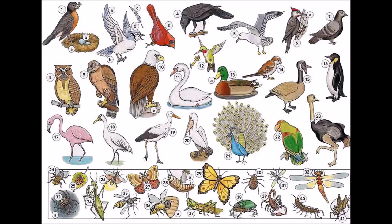Birds and Insects. Birds. 1. Robin A. Nest B. Egg. 2. Blue Jay A. Wing B. Tail C. Feather 3.